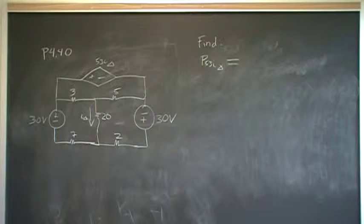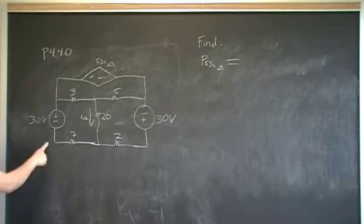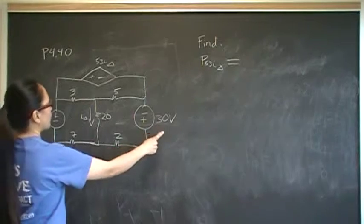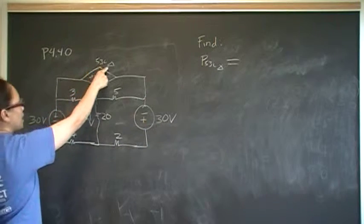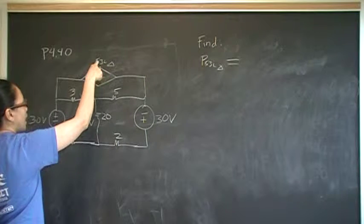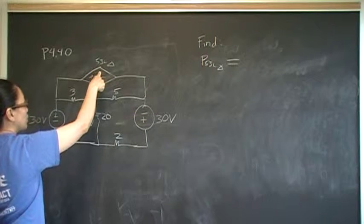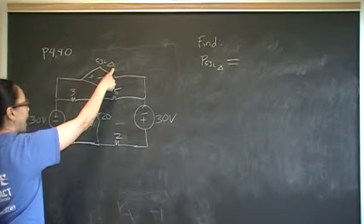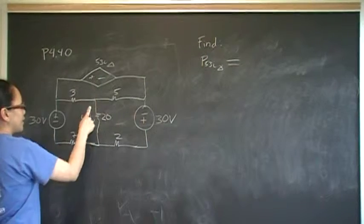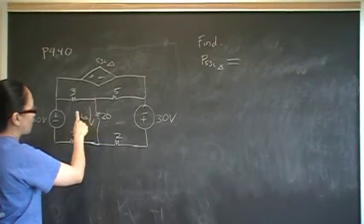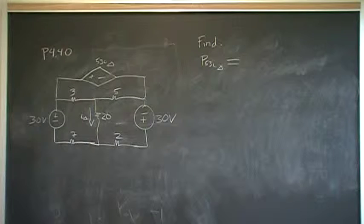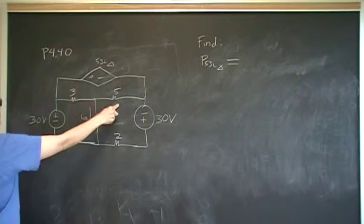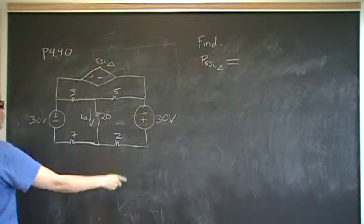Let's describe the circuit. We have two independent voltage sources: 30 volts here and 30 volts here. We have one dependent voltage source, 53I delta — this is a current-controlled dependent voltage source, and its value is controlled by I delta, which is the current that goes through the 20 ohm resistor. The rest of the resistor values are 3, 5, 20, 7, and 2.